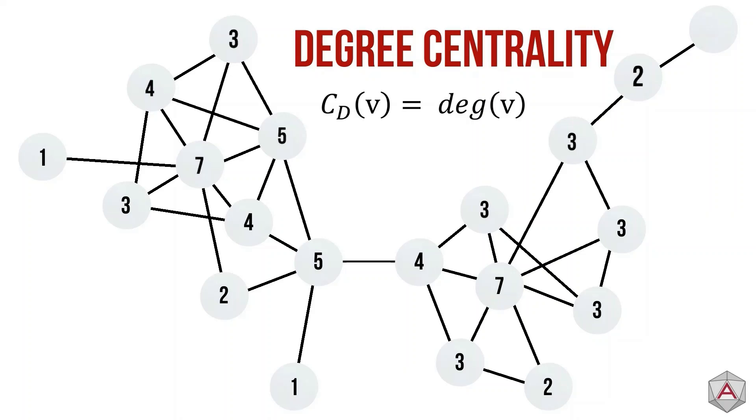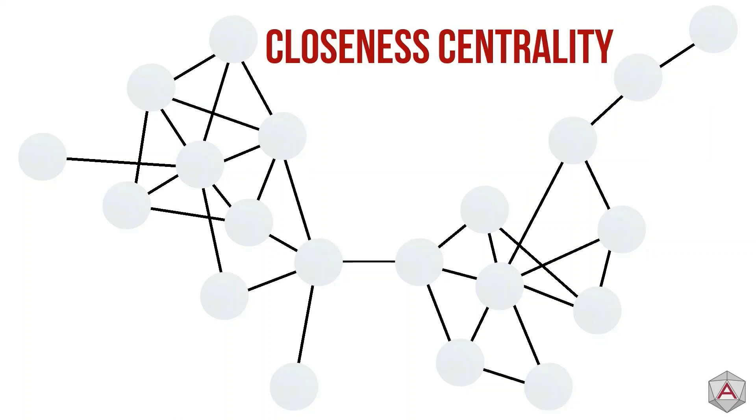A slightly more complicated centrality measure is closeness. The closeness centrality of a node is the average length of the shortest path between that node and all other nodes in the graph. Its equation looks a little complicated, so let's break it down.